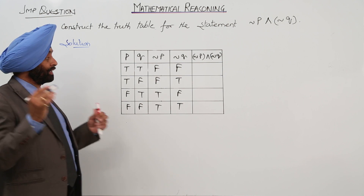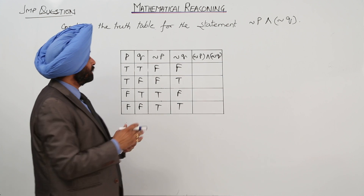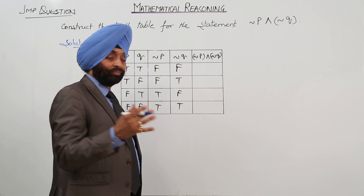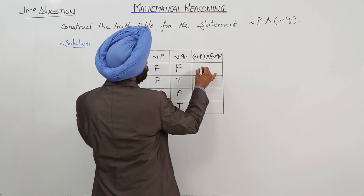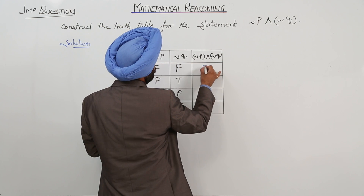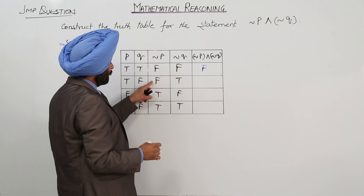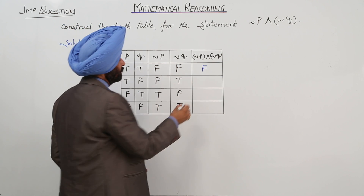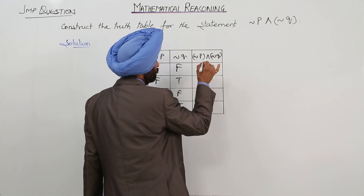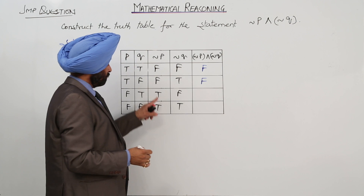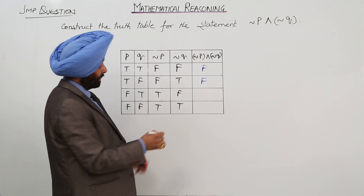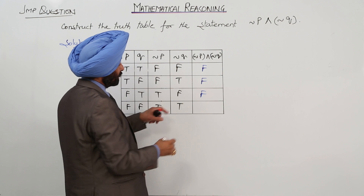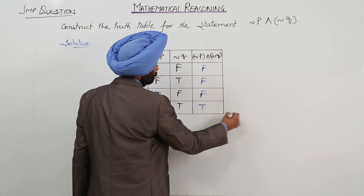We are going with an AND table. In the AND table: both are false — result will be false. One is false, one is true — false. One is true, one is false — false. Both are true — true.